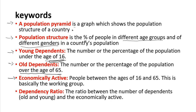The economically active population are people between the ages of 16 and 65 — basically the working group. The dependency ratio is the ratio between the number of dependents and the economically active, where dependents are the old and young combined.